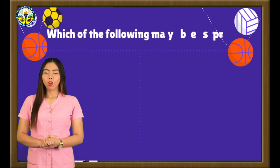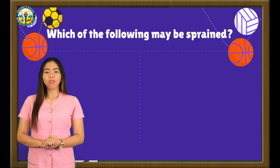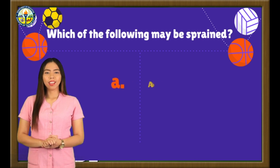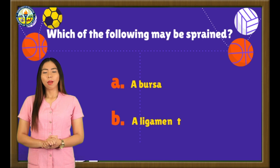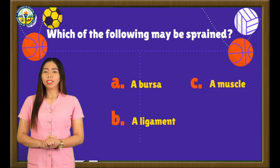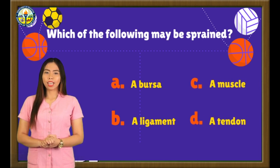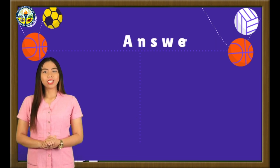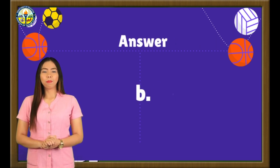Number 5. Which of the following may be sprained? A. A bursa. B. A ligament. C. A muscle. Or D. A tendon. The correct answer is letter B: A ligament.